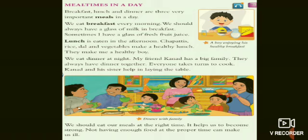People who don't have their breakfast will get heart diseases easily, so never skip your breakfast. For breakfast you can have some healthy meals such as fruits, fruit salads, and fruit juices. Lunch is eaten in the afternoon. Chapatis, rice, dal, and vegetables make a healthy lunch. For lunch you can have chapatis, rotis, rice, dal curry, sambar, and similar foods.